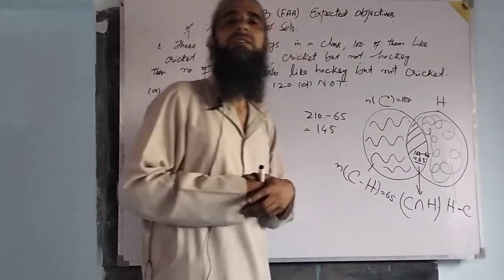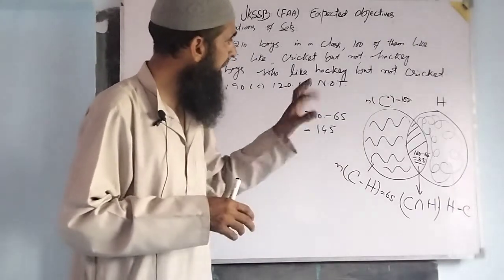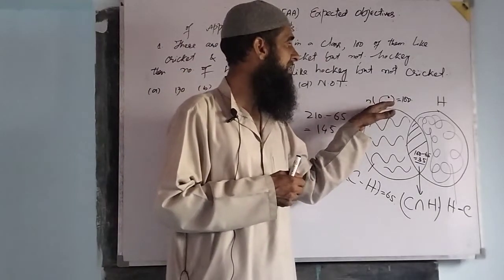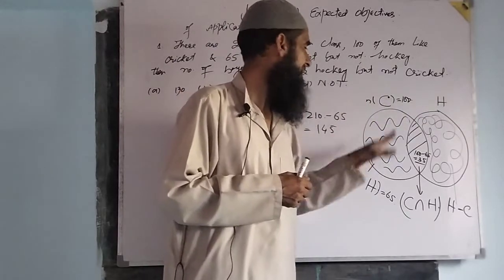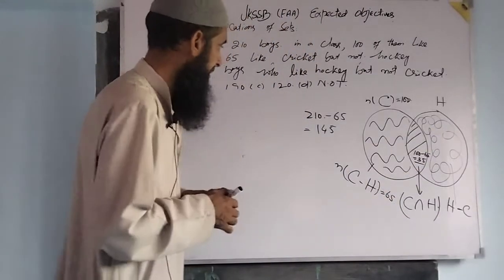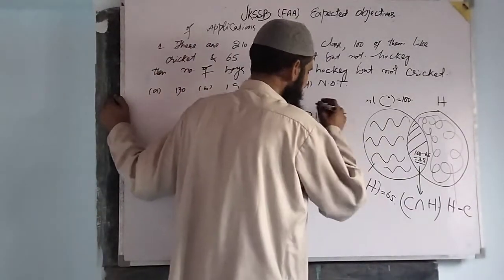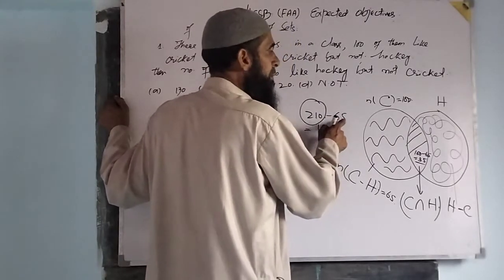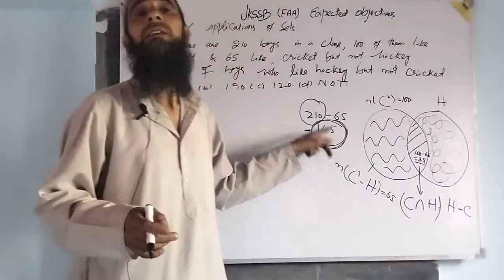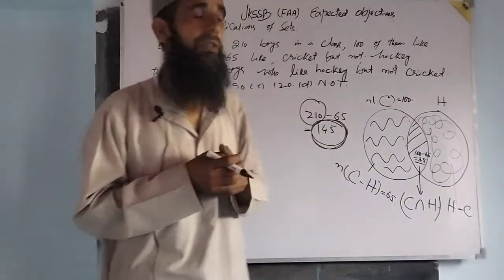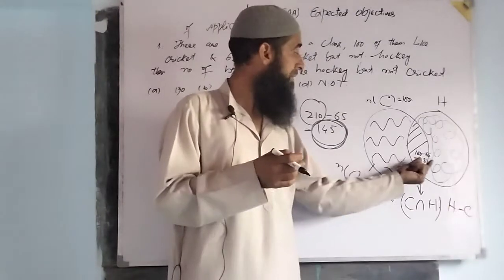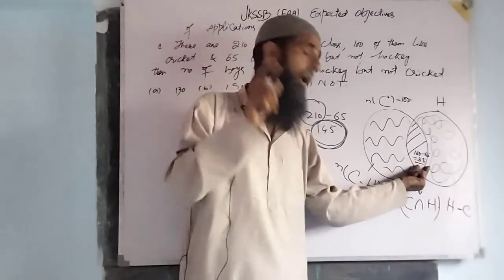Now we have to find H minus C. We have the number of elements in C, so we can easily find the number of elements in H. We have number of elements in C minus H, that is 65. There are 210 total boys, 65 boys like cricket but not hockey, therefore 145 boys like hockey. The number of boys who like cricket as well as hockey is 35.